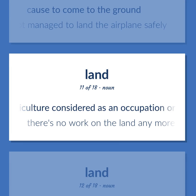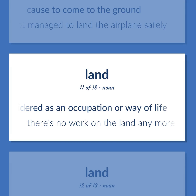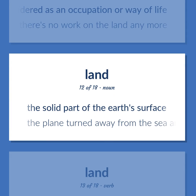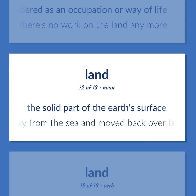Land: agriculture considered as an occupation or way of life — there's no work on the land anymore. Also, the solid part of the Earth's surface — the plane turned away from the sea and moved back over land.